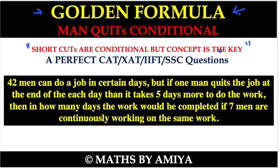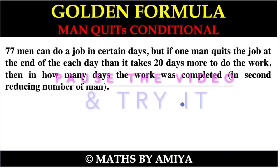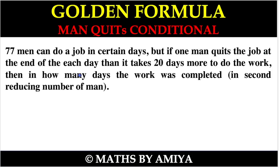I'm going to solve a question asked in the main examination first — this might come in SBI Tier 2 and CAD, as it is the advanced version. The basic question is: 77 men can do a job in a certain number of days, but if one man quits at the end of each day, it takes 20 more days. How many days does the work get completed when the number of men is reducing?